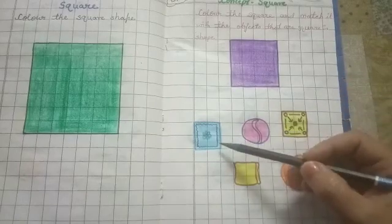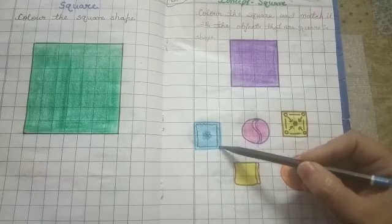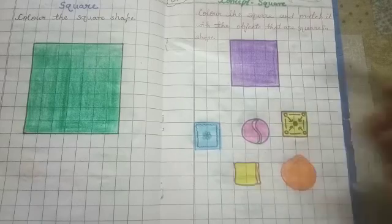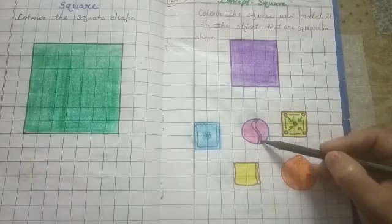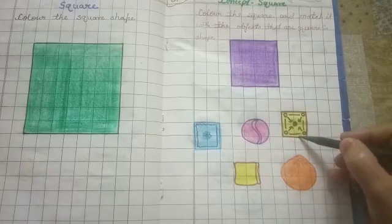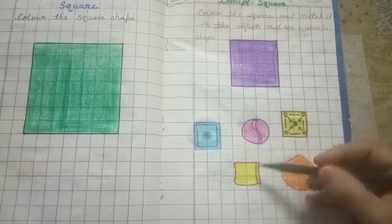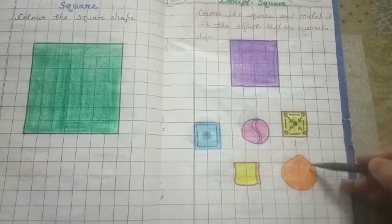Firstly, tell me what is this? It's a hanky, handkerchief. And this one is ball. And this one is carom board, bread slice and orange.